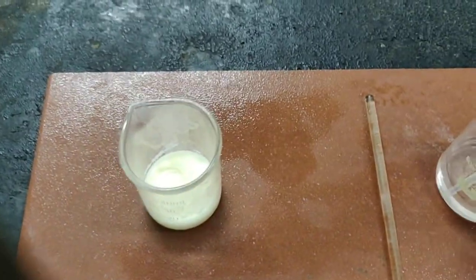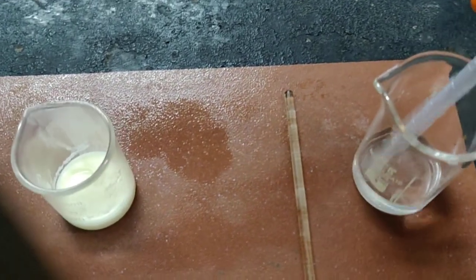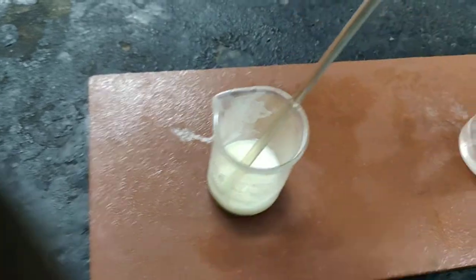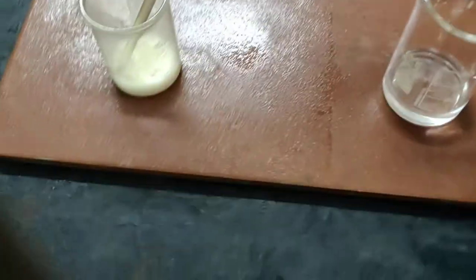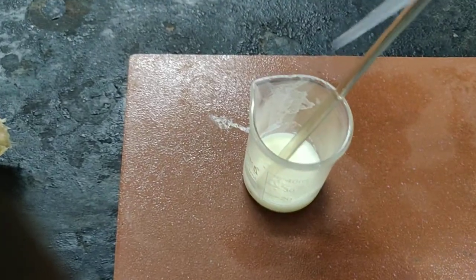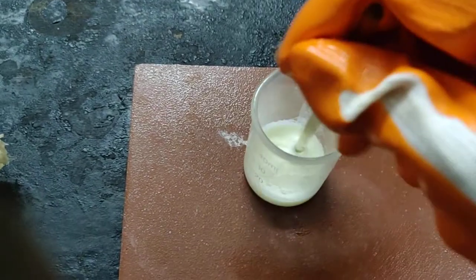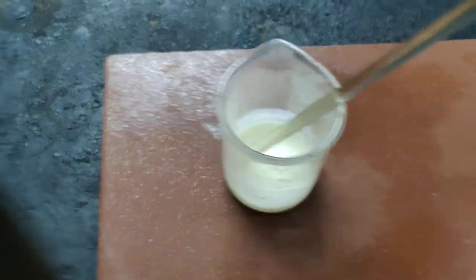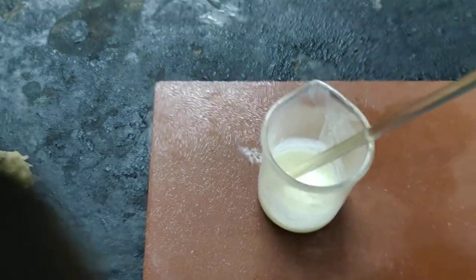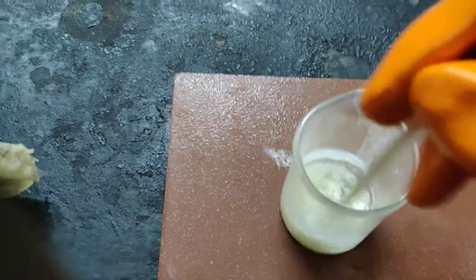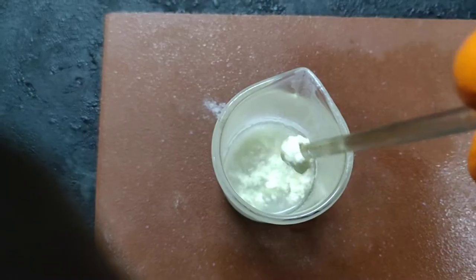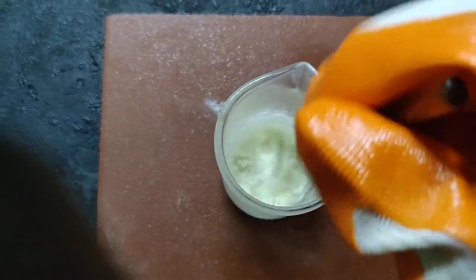The milk is sufficiently hot now. Go on adding 10% acetic acid with stirring. So add one drop, stir. Add another drop and stir well. See here the milk has already curdled. It has curdled.